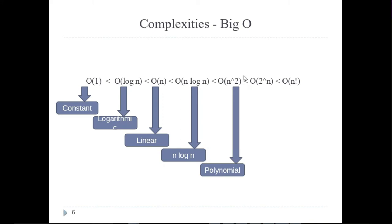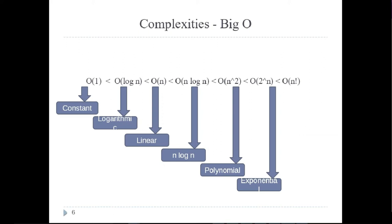The next class of algorithms are exponential algorithms like 2 power n, 3 power n, where n becomes an exponent. You typically see those complexities when you're trying to generate all possible combinations — in other words, brute force. Another class gives you factorial complexity — for example if you're looking at all possible permutations, you will come up with factorial complexity.